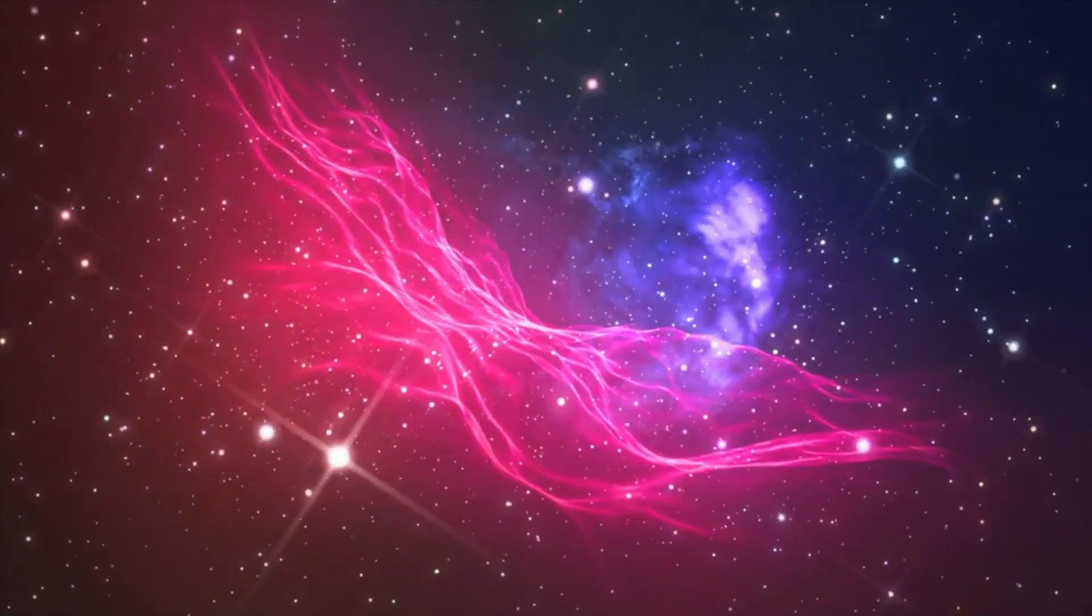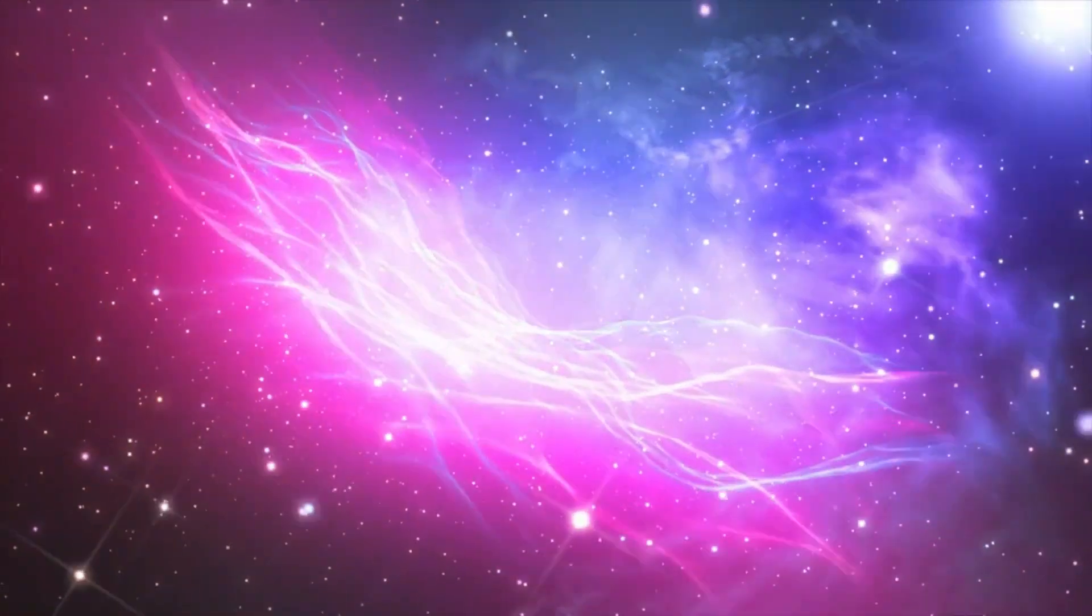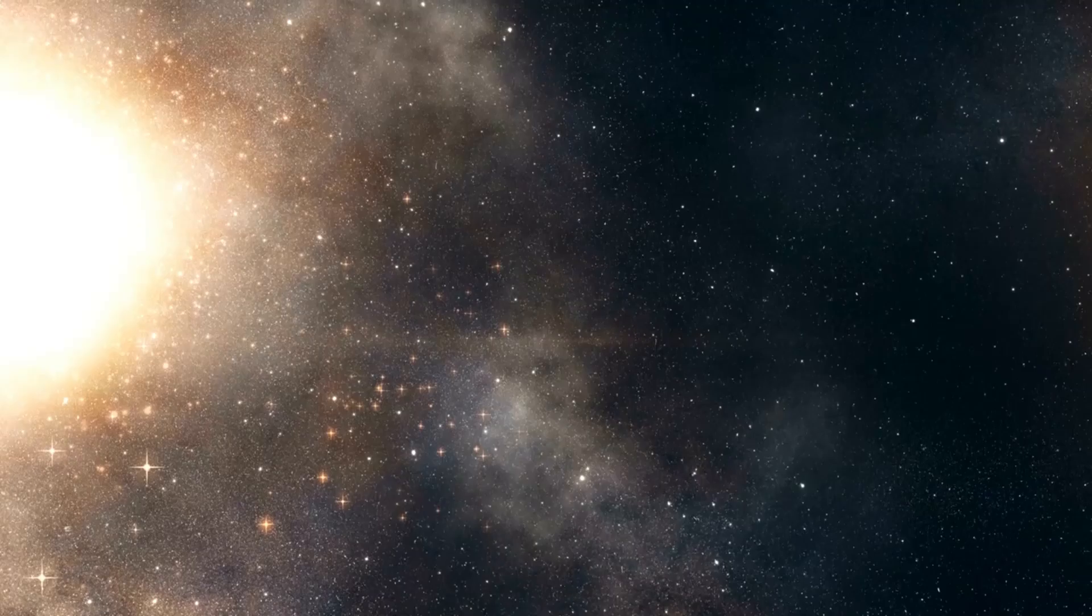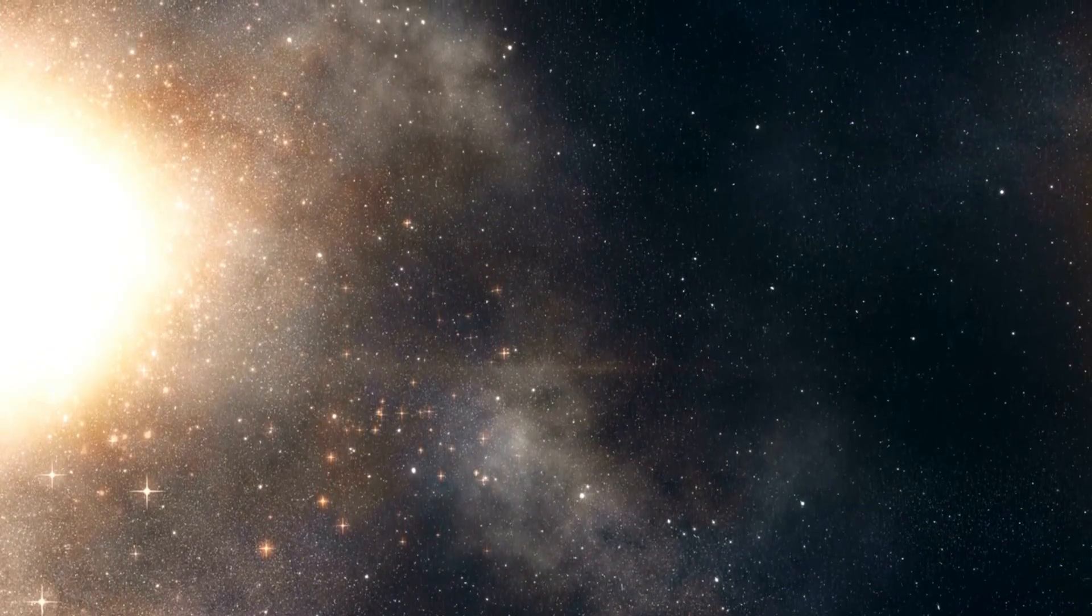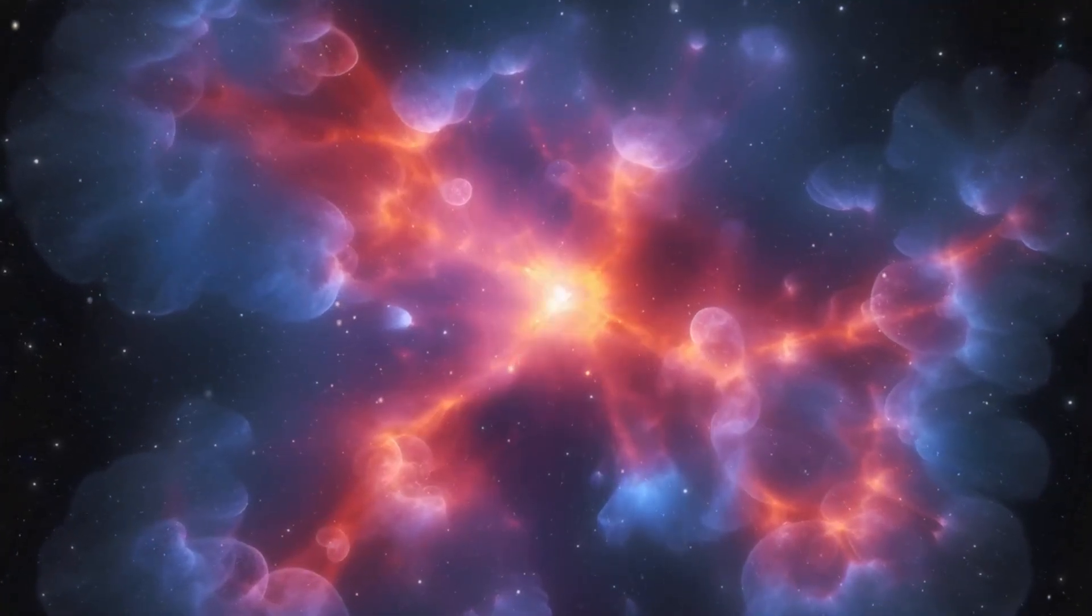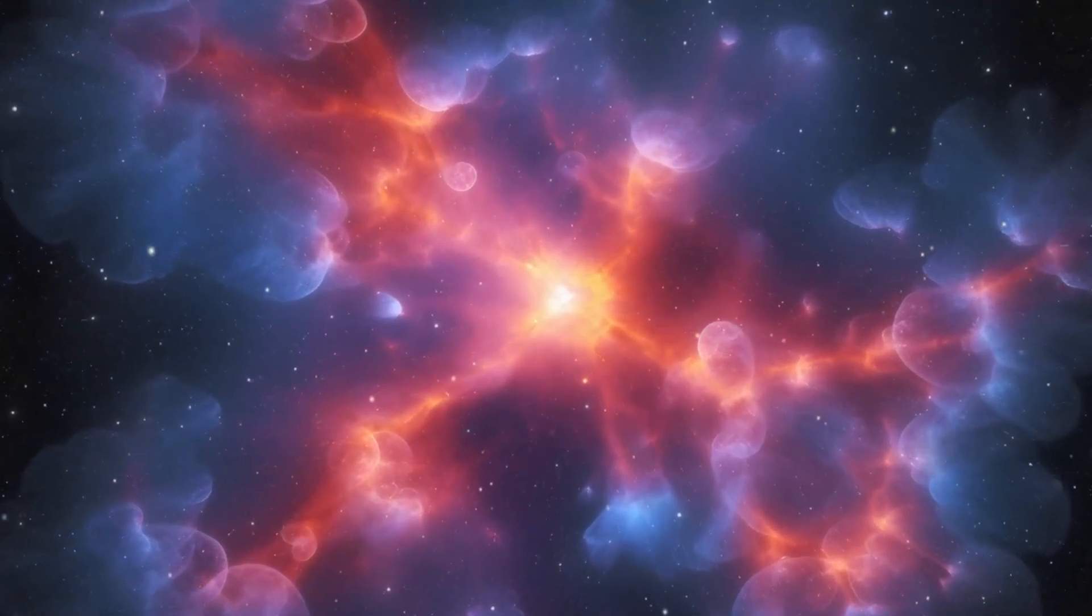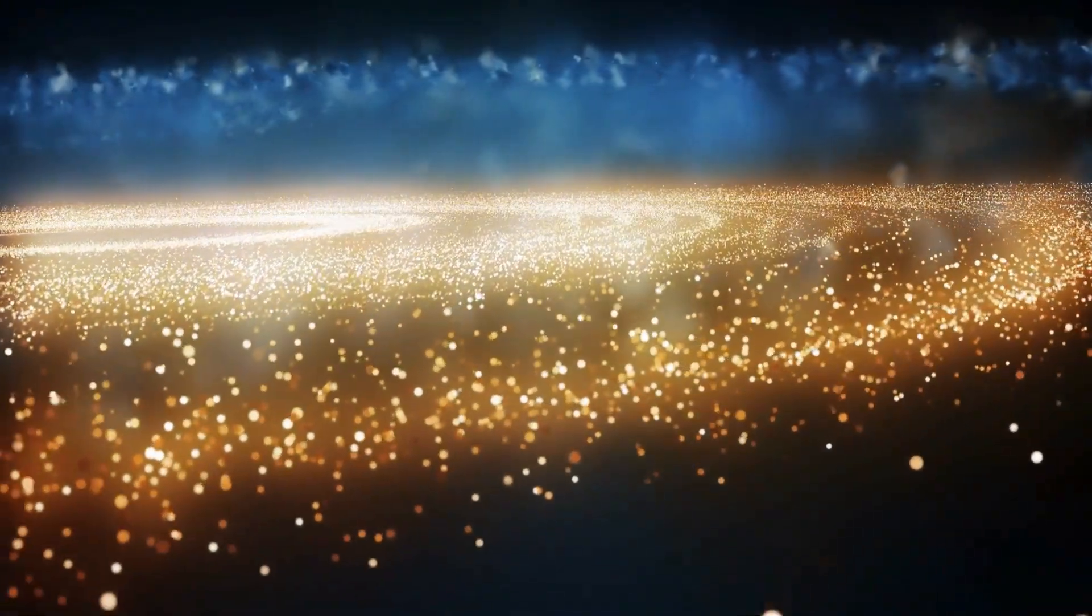As we know, black holes exert an extremely powerful gravitational force, so intense that even light cannot escape. However, in the vicinity of a black hole, one often finds a swirling disk of material such as gas or dust, drawn in by its immense gravity. This material heats up as it spirals inward, emitting X-rays and other forms of radiation, creating a glowing ring known as the corona.